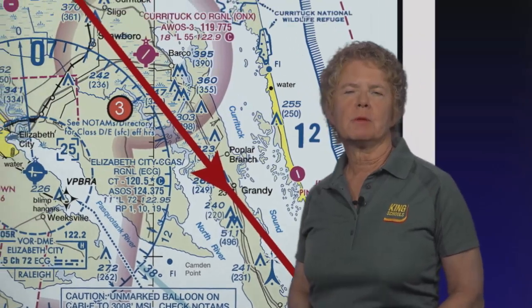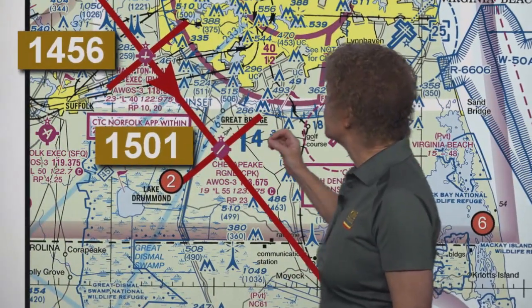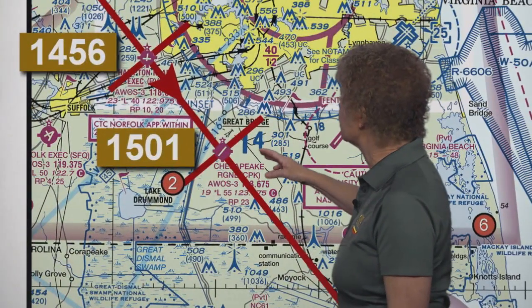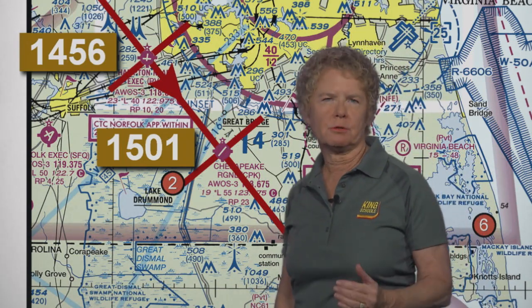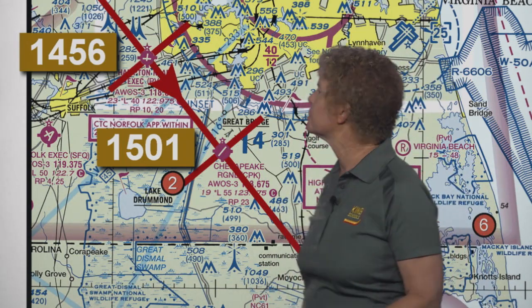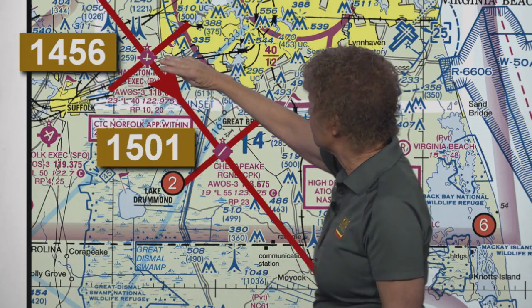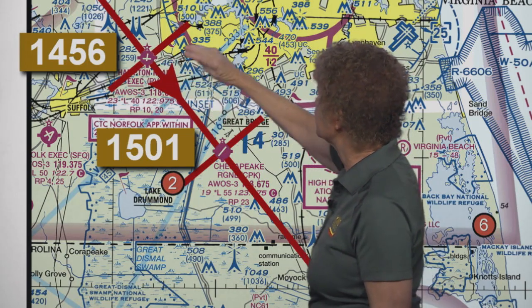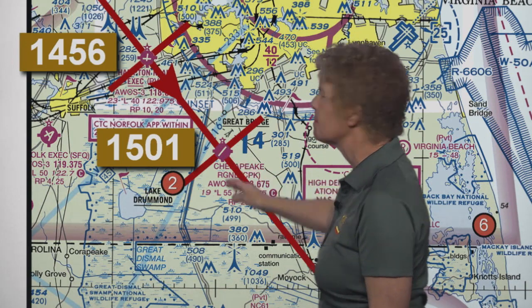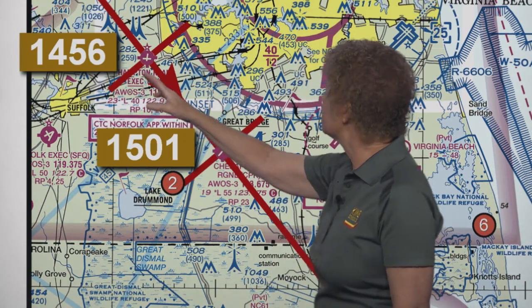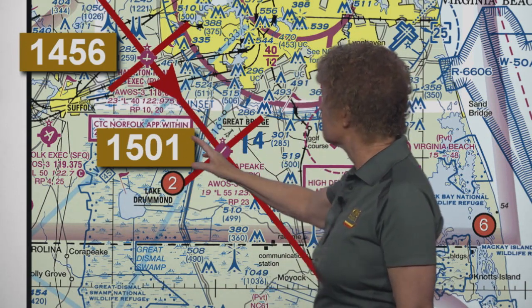Taking a look at the trip between Hampton Roads Airport and Chesapeake Regional Airport, the first thing we can see pretty clearly is the time between those two airports. We crossed Hampton Roads at 1456, we crossed Chesapeake at 1501, so it took us five minutes to fly between those two airports.